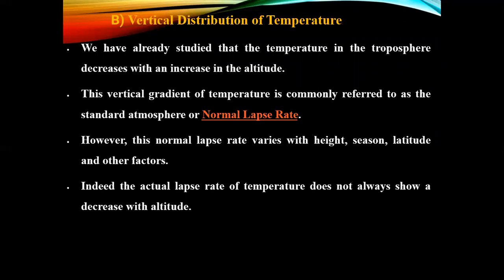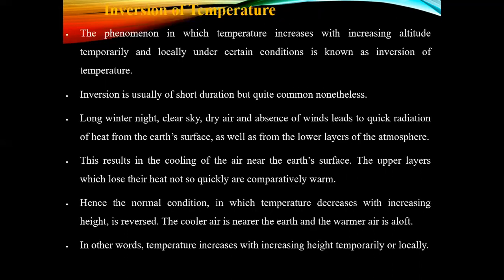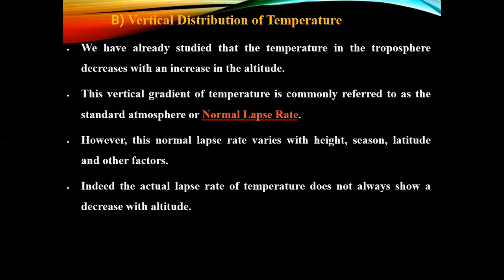The vertical distribution of temperature. We have already studied that temperature in the troposphere decreases with increasing altitude. The vertical gradient of temperature is commonly referred to as the standard atmosphere or normal temperature lapse rate. However, this normal lapse rate varies with height, season, latitude, and other factors. Indeed, the actual lapse rate of temperature does not always show a decrease with altitude.